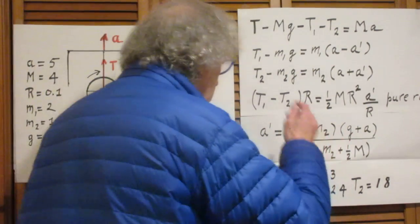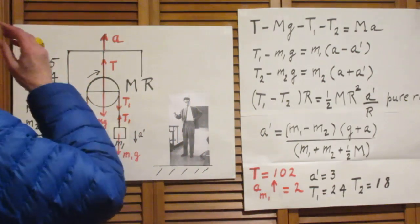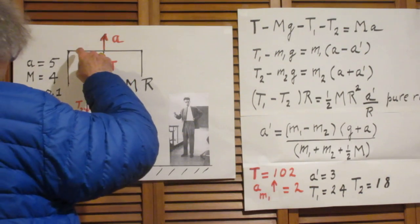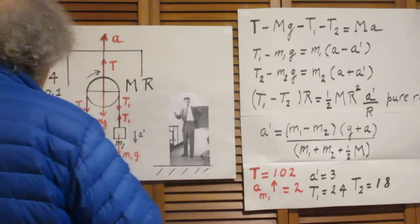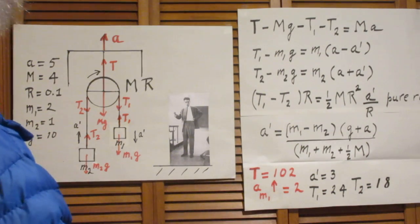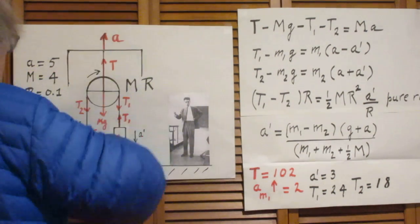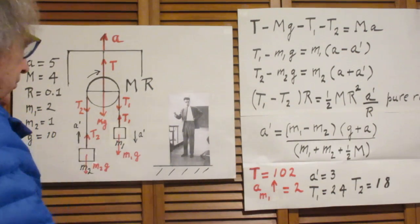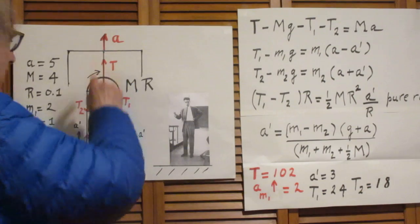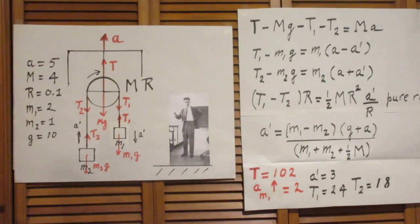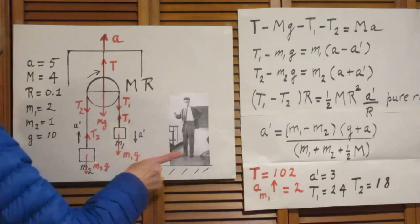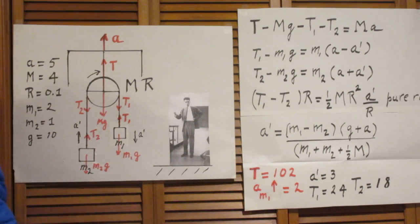Another interesting thing: suppose you let this elevator go into free fall. So you cut the cable at the top and the whole system free falls down. That means a is now minus g. When a is minus g, this tension goes to zero, this tension goes to zero, this tension goes to zero, a prime goes to zero.